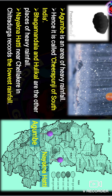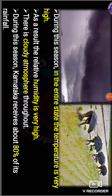The Nayanakatti near Chalkere in Chitradurga records the lowest rainfall. During the rainy season, the temperature is very high. As a result, the relative humidity is also very high, with a cloudy atmosphere throughout. Karnataka receives about 80% of its rainfall during this season. This helps in the cultivation of Kharif crops.